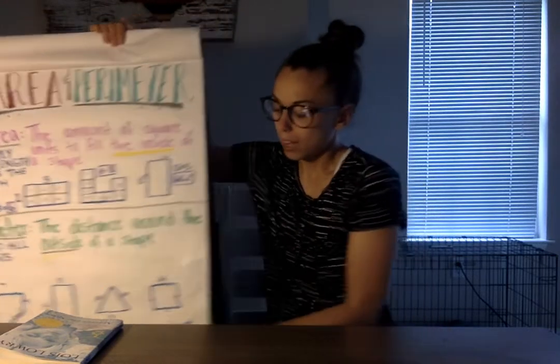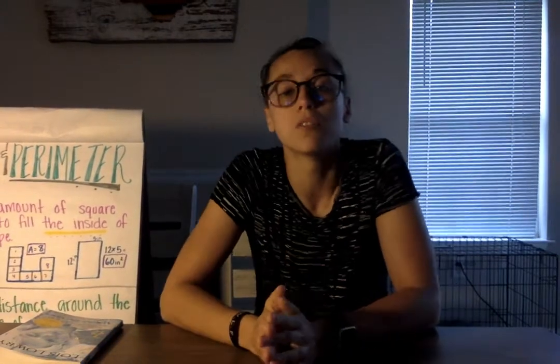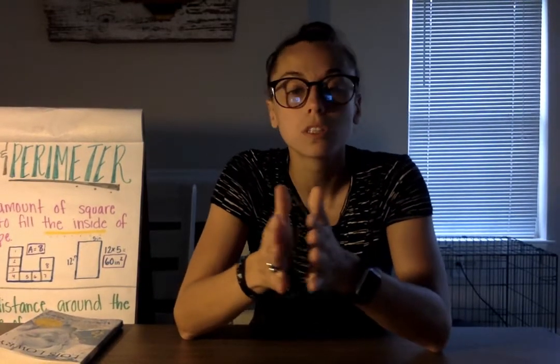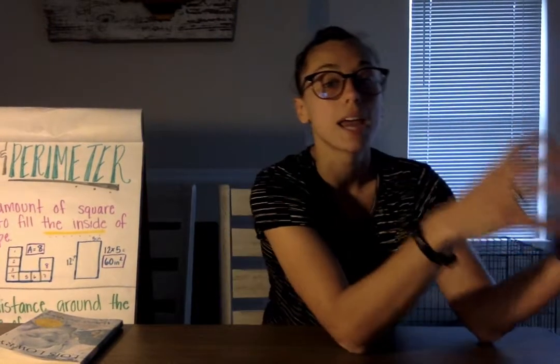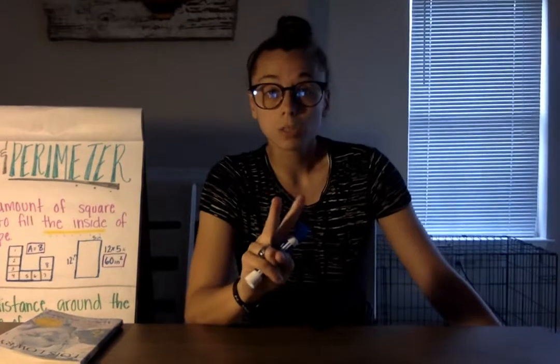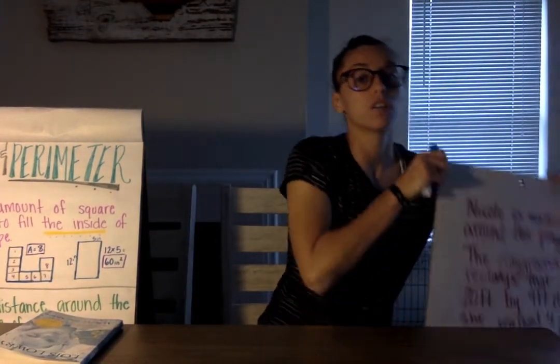To bring it up a notch, because I know you guys are super smart, we're now going to be focusing on area and perimeter word problems. This is where it gets tricky because the word problems aren't going to tell you to use area or perimeter. You're going to have to figure out which one to use based on whether you're finding what's around the shape or what's on the inside.